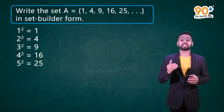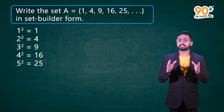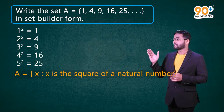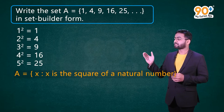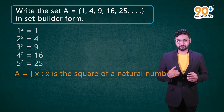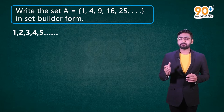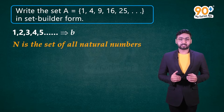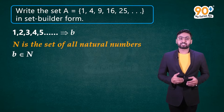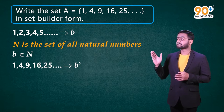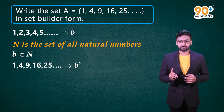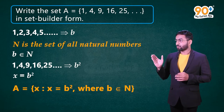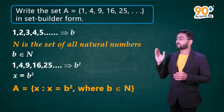Each element is a square of a natural number. Using this property, we write the set in set builder form. Let's denote this set with A and its elements with x. So we can write A = {x : x is the square of a natural number}. We can also write this alternatively: let natural numbers be represented by b, where b ∈ N. Their squares can be represented as b². So the elements are x = b², and we can write A = {x : x = b², b ∈ N}. This is the required answer.